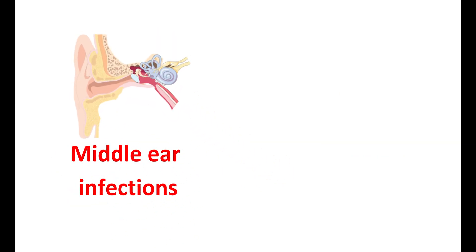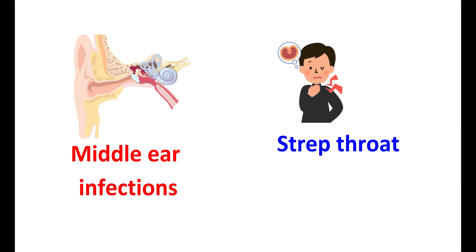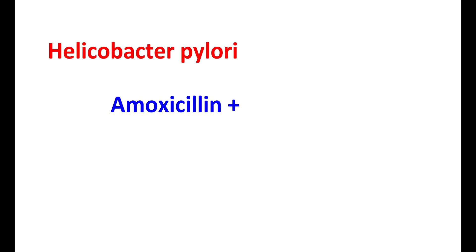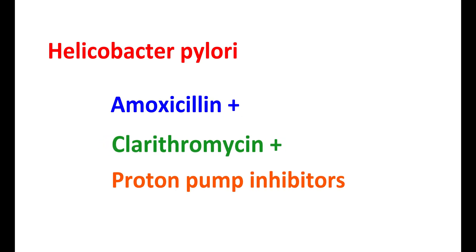Amoxicillin is also useful in treating bronchitis and pneumonia caused by bacteria. It can be used in treating middle ear infections and in relieving strep throat, which affects the throat and tonsils, producing a sore throat, pain, and difficulty swallowing. For tooth abscesses and dental infections, this medication can also be used. In Helicobacter pylori eradication, amoxicillin can be combined with other antibiotics like clarithromycin and proton pump inhibitors. It is also used for treating skin and soft tissue infections.